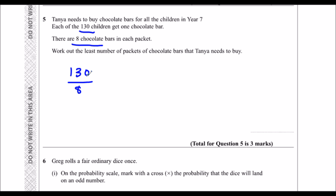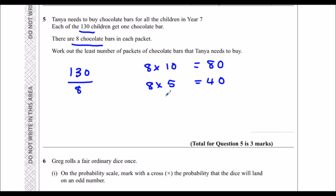How many 8s make 130? We could use long division, or we could just count up. So 8 times 10 is 80, and 8 times 5 is 40. Adding those together, 8 times 15 is 120. I'm almost at 130, so if I add one more 8, I've got 128.